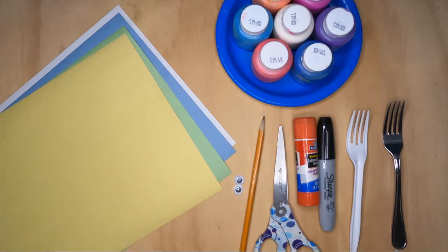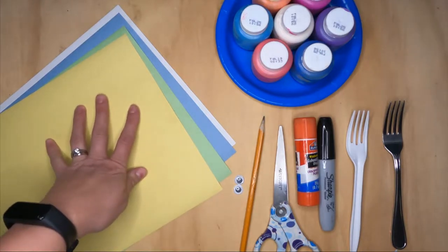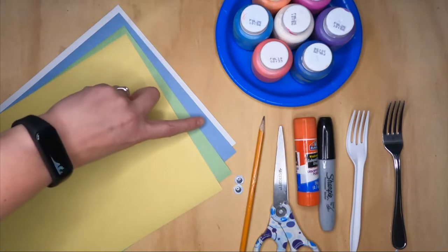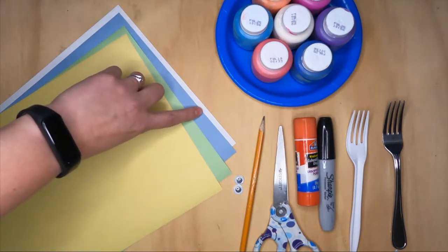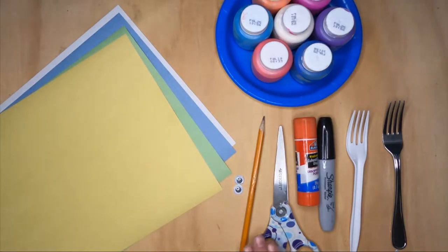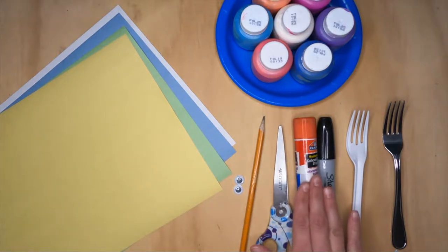To start off this craft you're going to need some construction paper. I just chose a variety of colors but I made sure I at least had one that was blue to do some water later on. You're going to need some scissors, a pencil, glue stick, and marker.